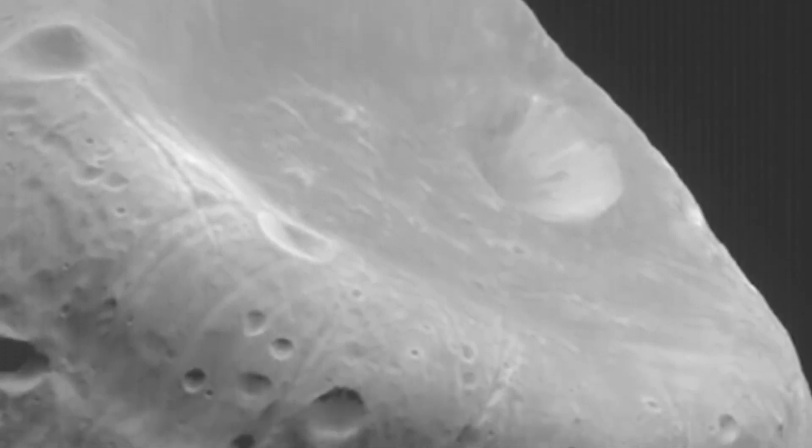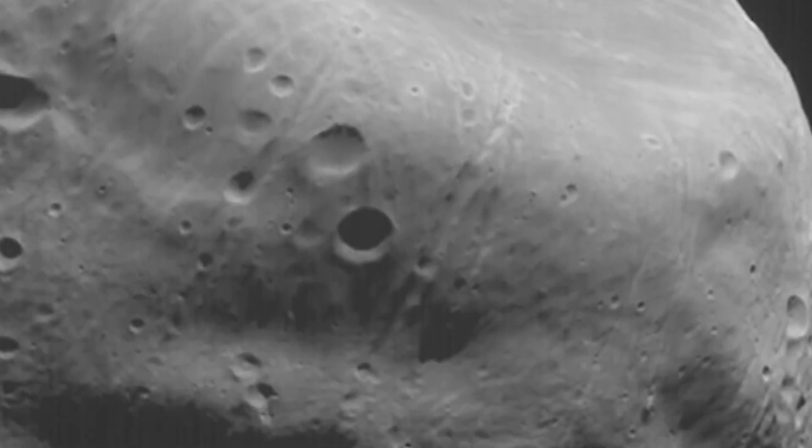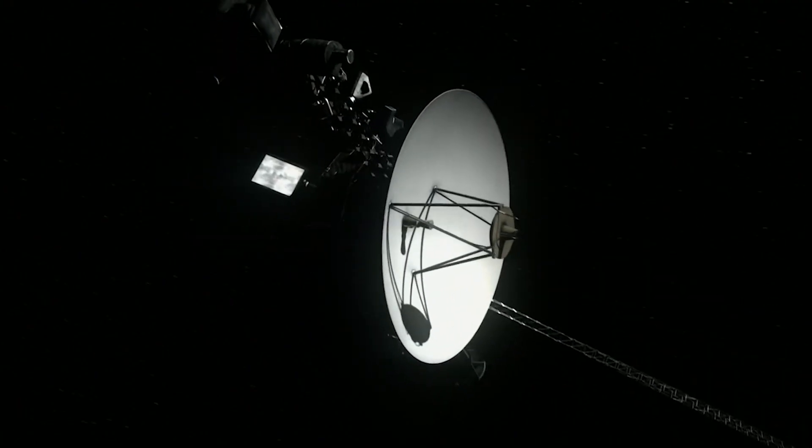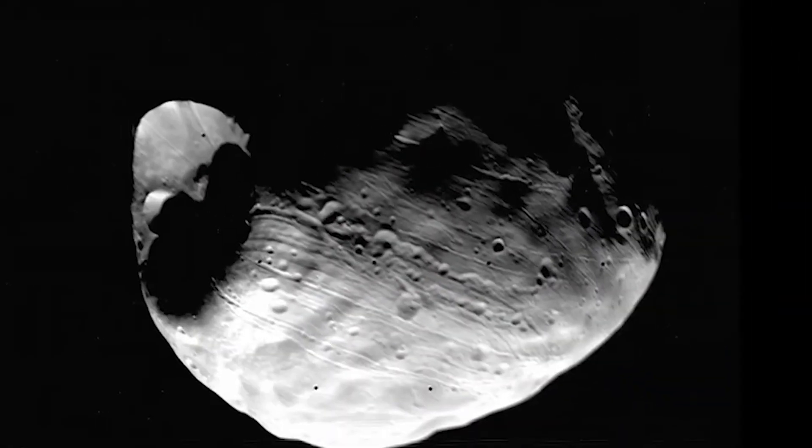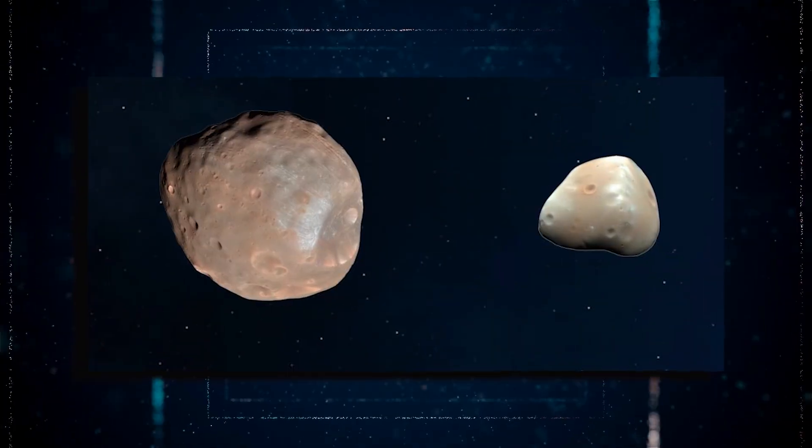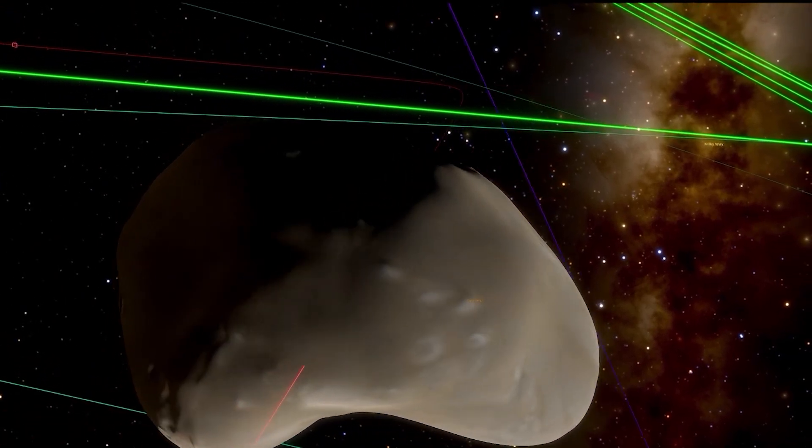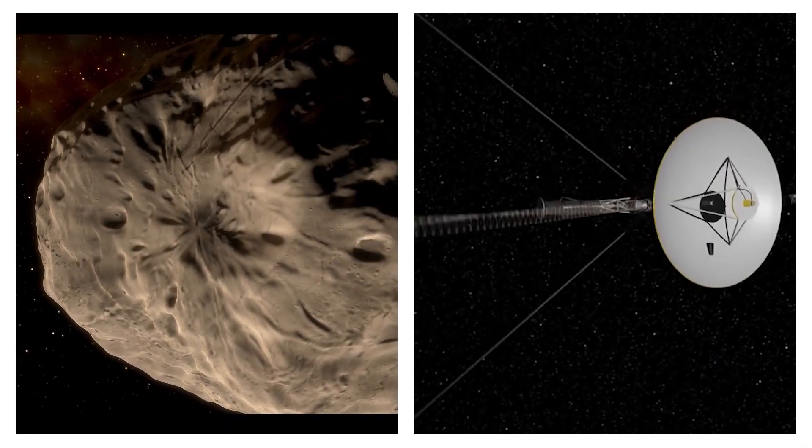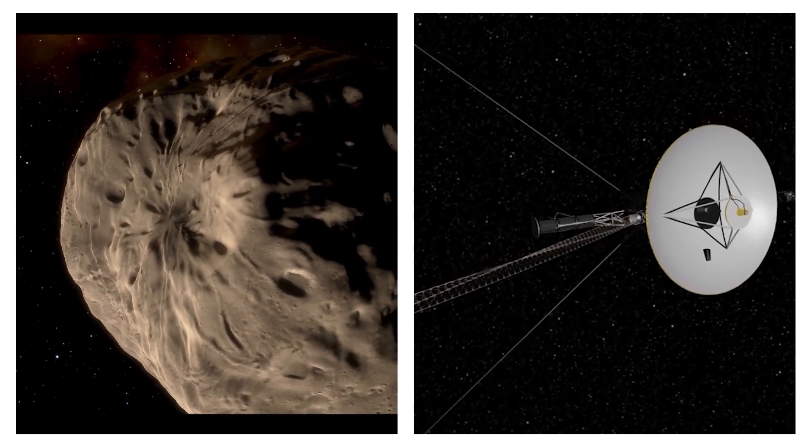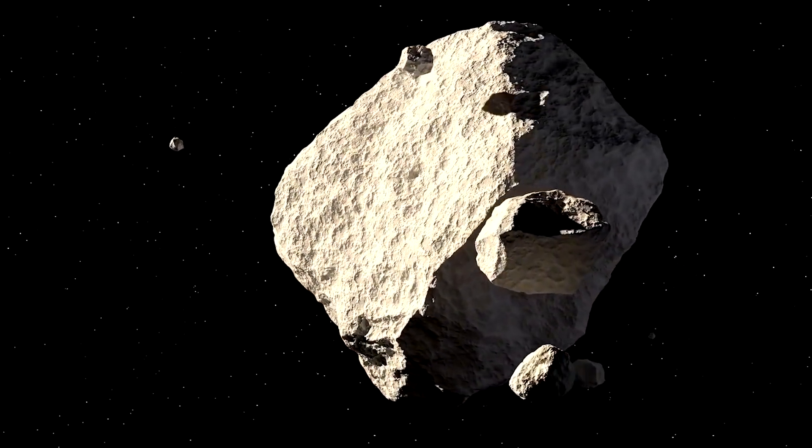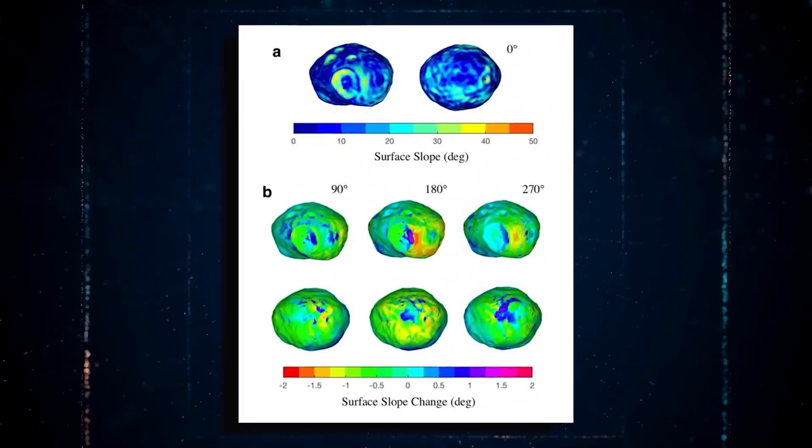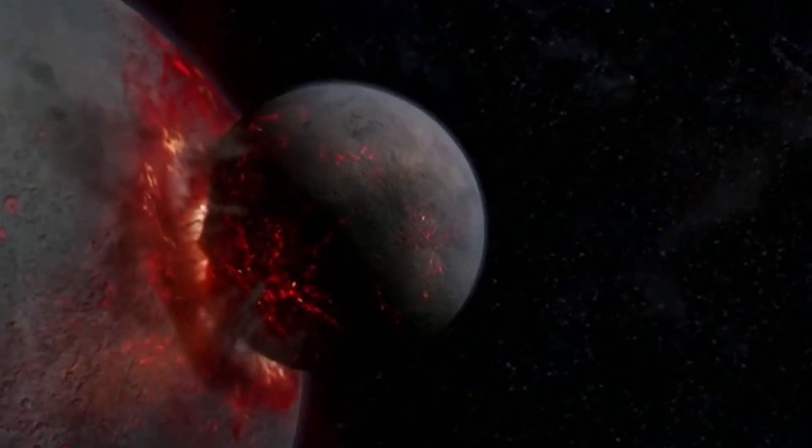Another captivating aspect of these moons was their extensively cratered surfaces. Voyager's close-up images showcased numerous impact craters, signifying a history of intense bombardment by meteoroids and space debris. The presence of such craters raised questions about the age of Phobos and Deimos and provided valuable insights into the dynamics of the early solar system. Voyager's measurements also unveiled the low density of these moons, indicating that they are primarily composed of rock and ice.